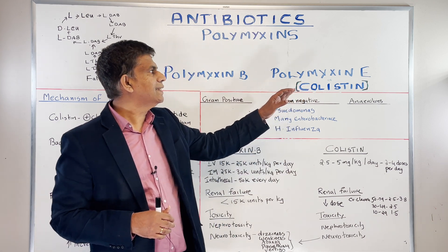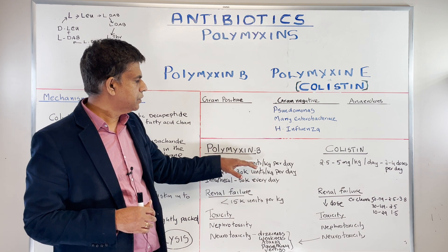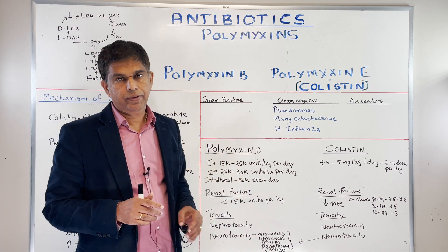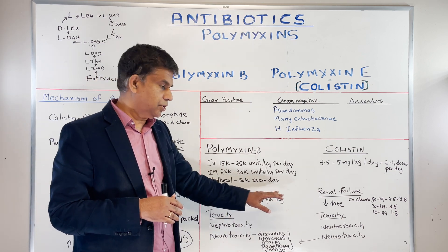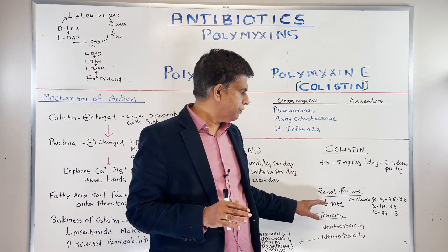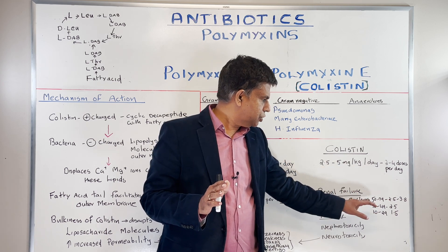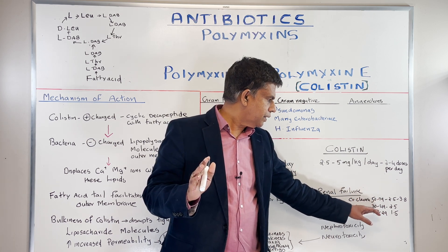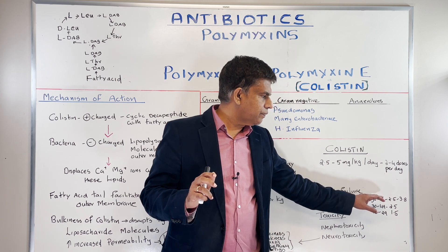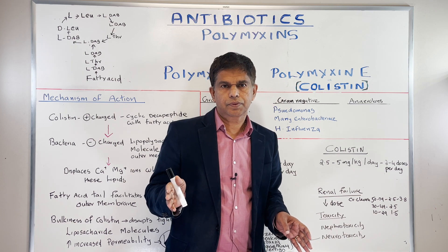Two drugs: polymyxin B and polymyxin E, which is colistin. For polymyxin B dosage: IV is 15,000 to 25,000 units per kg per day; IM can also be given at 25,000 to 30,000 units per day; intrathecal can be given at 50,000 units every day. In renal failure, use a reduced dose of about 15,000 units. For colistin, give 2.5 to 5 mg per kg per day divided into 2 to 4 doses. In renal failure, decrease the dose based on creatinine clearance: CrCl 50–79 gives 2.5–3.8 mg/kg, CrCl 30–49 gives 2.5 mg/kg, and CrCl 10–29 gives 1.5 mg/kg. For CrCl 50–79 you can dose twice daily, but for 30–49 and 10–29 you dose around every 36 hours.